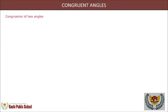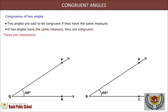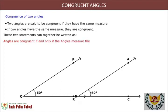Congruence of angles: Two angles are congruent if they have the same measure. If two angles have the same measure, they are congruent. These two statements can together be written as: angles are congruent if and only if the angles measure the same.